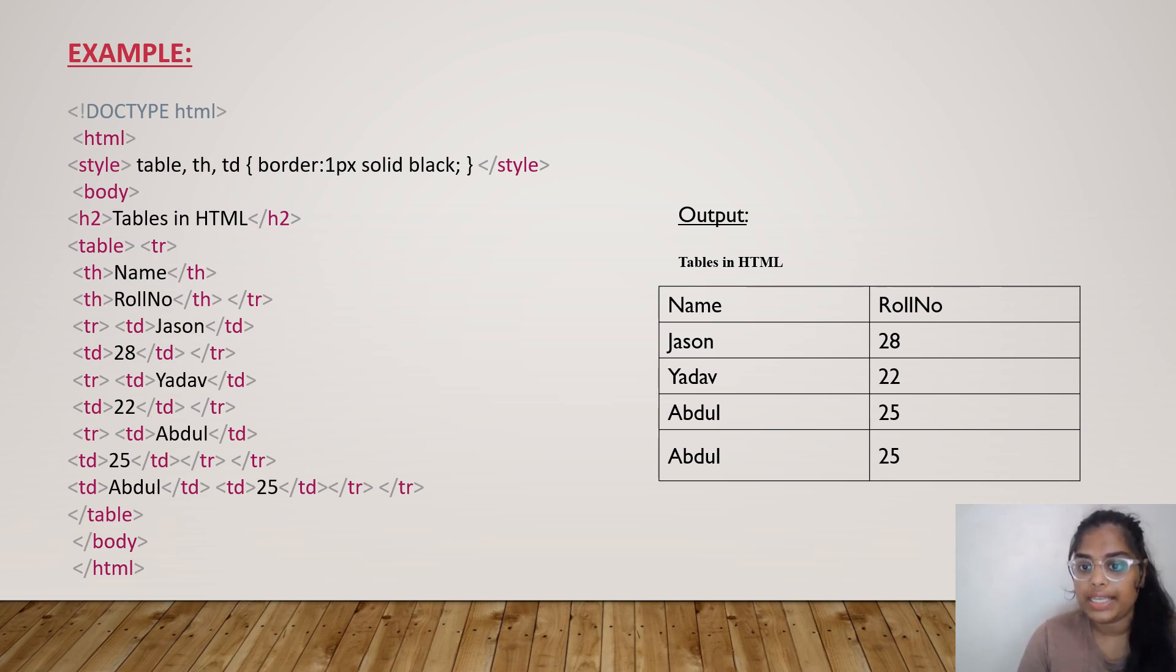Here we have name, row number and three different people. Abdul's number is repeated twice. For each and every tag we use, there is a closing tag. We close the table tag also. This is the output for this particular program. That's about how we use the tables, the outputs, examples, tags, cell spacing, and cell padding.